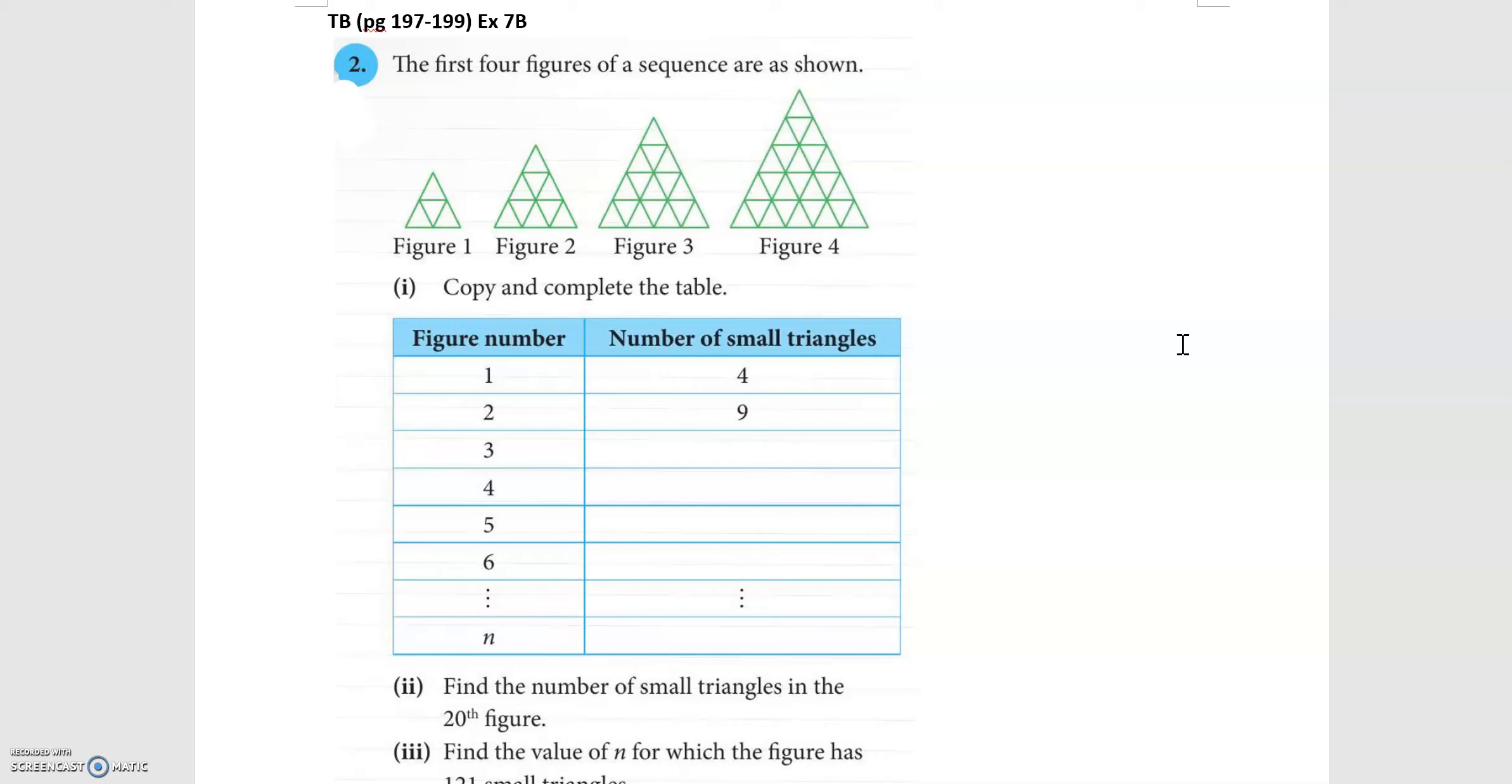So for figure number three if you were to count the number of triangles you will see that we actually have 16 of them. For figure number four, 25 of them.